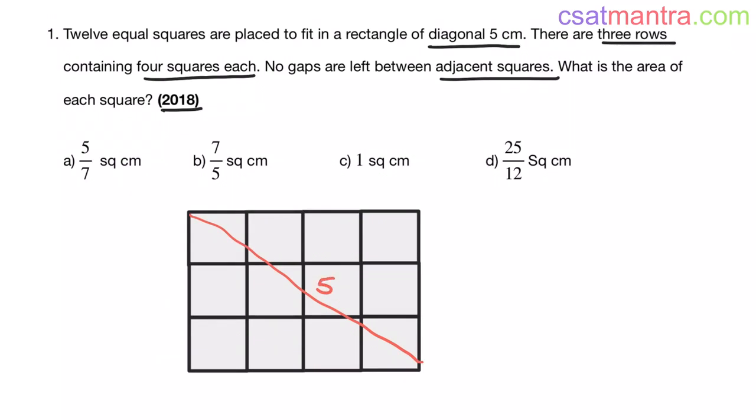Diagonal 5 is possible only when this is 3 and this is 4. We know the Pythagoras theorem, right? 3 square plus 4 square which is equal to 5 square.